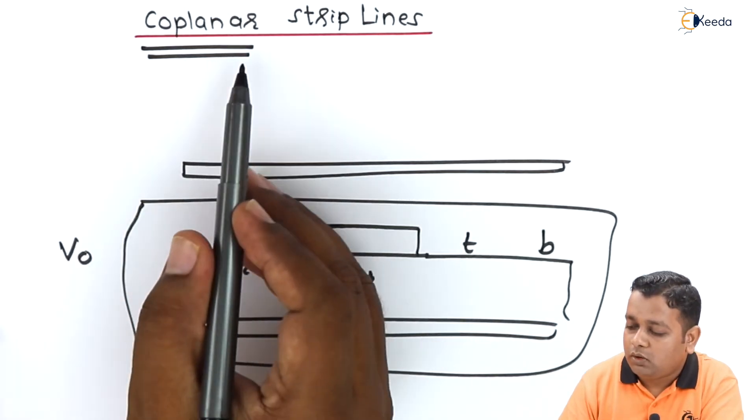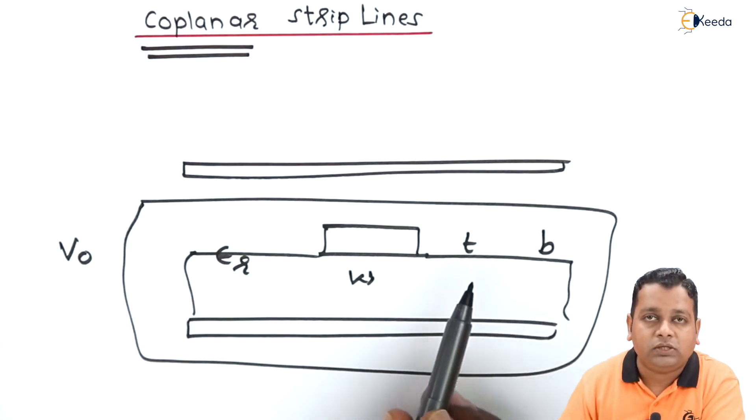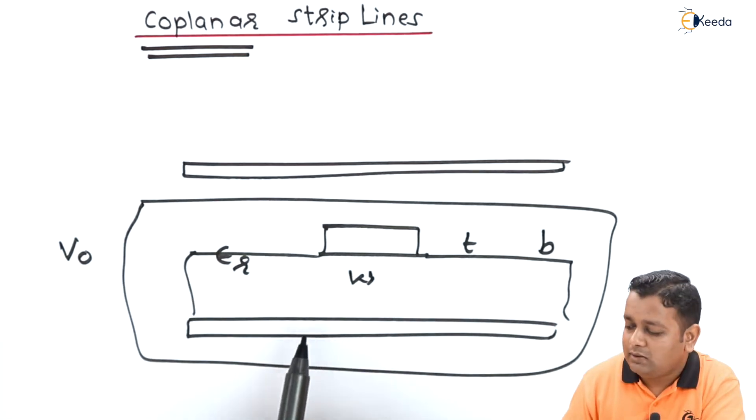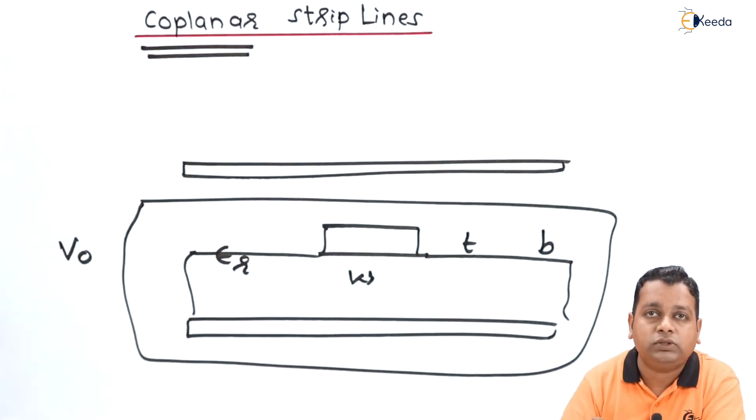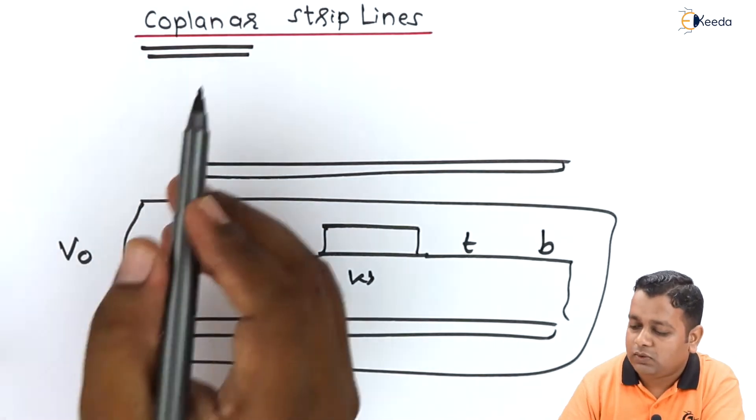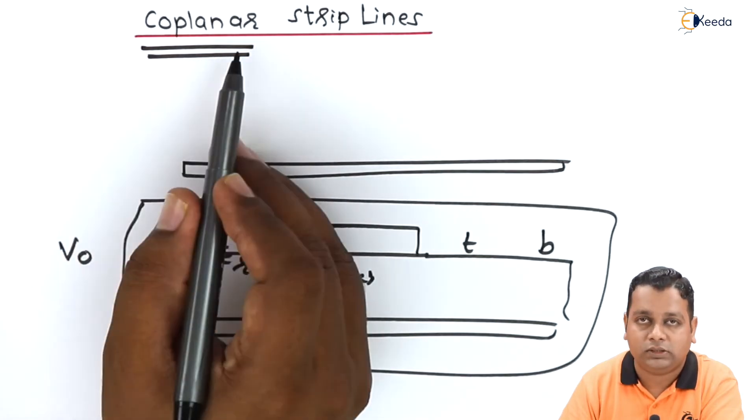Now when we talk about coplanar, the plane with respect to the dielectric material and to the ground is the same for the two strips. A better way I can show you the two strip lines that are coplanar to each other. Hence the name coplanar strip lines.